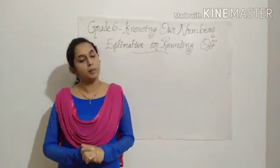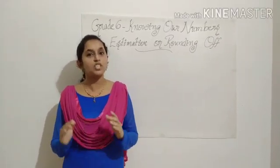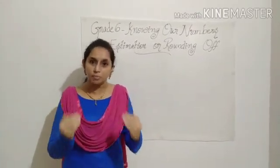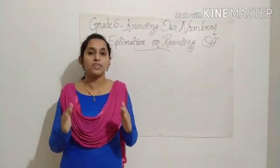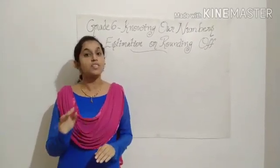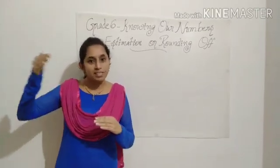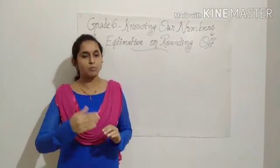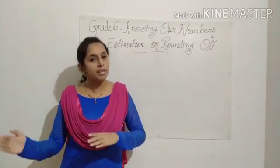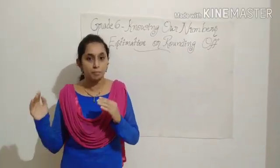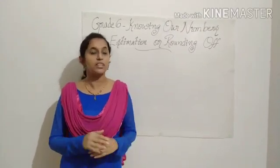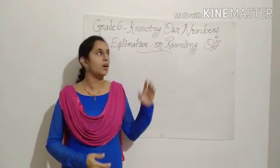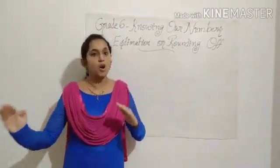I can make it more clear by an example. If I say in a marriage party there were approximately 1000 people present, I don't mean there were accurately 1000 people — just almost 1000. One more example: in a cricket stadium there were approximately 50,000 people present, meaning not exactly 50,000 but close to that. I hope the word estimation is clear to you — it's just an approximated value.